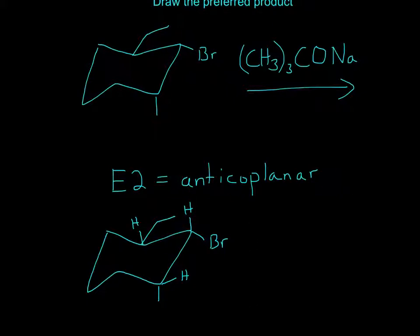So, for anti-coplanar, that means that the hydrogen and the leaving group have to be opposite each other, right? So, we have to make sure that this bromine is either opposite from this one or this one. And so, let's look at this case. In this case, we can't actually tell if it's completely opposite.